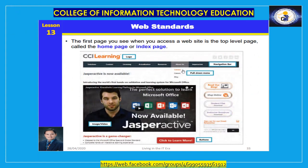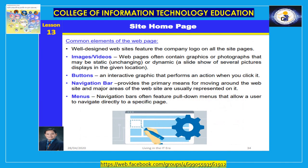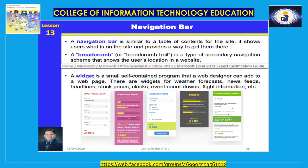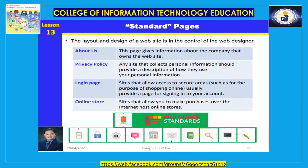Web standards. The first page you see when you access a website is the top-level page called the home page or index page. Well-designed websites feature the company logo on all site pages along with images, videos, buttons, navigation bars, and menus. A navigation bar is similar to a table of contents — it shows users where they are on the site and provides a way to get there. A breadcrumb trail is a type of secondary navigation scheme that shows the user's location within a website. A widget is a small self-contained program that a web designer can add to a web page. Standard pages include About Us, Privacy Policy, Login page, and Online Store.